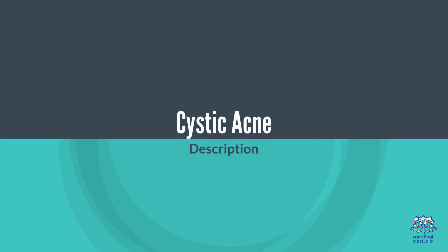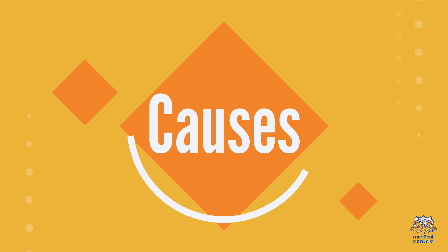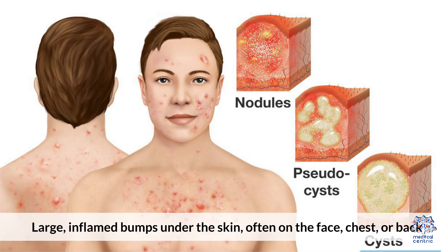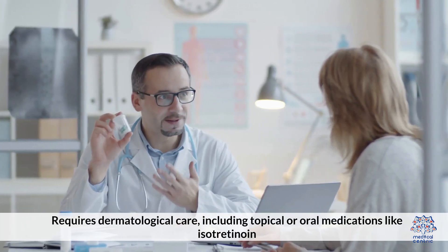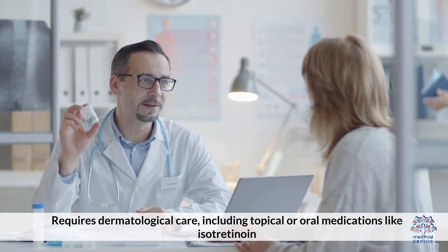Cystic Acne: A severe form of acne where infected pores or hair follicles form deep, painful cysts. Causes include hormonal changes, excessive oil production, and bacterial infections. Symptoms present as large, inflamed bumps under the skin, often on the face, chest, or back. Treatment requires dermatological care, including topical or oral medications like isotretinoin.